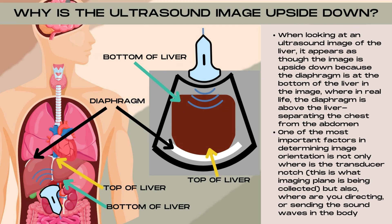When determining the orientation of an ultrasound image, we not only want to determine what slice we're taking through the body — so what transducer orientation, such as sagittal, transverse, etc., and where our transducer notch is — but we also want to consider where our sound waves are being directed. If we hold our probe straight up and down on the patient in a perpendicular fashion, the sound waves would be heading straight down into the patient's body towards the spine.